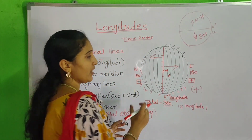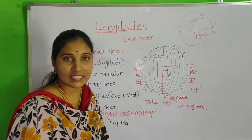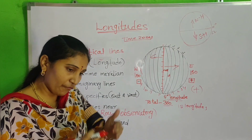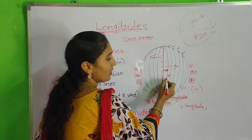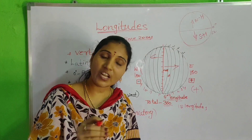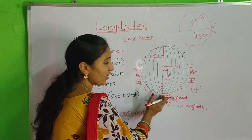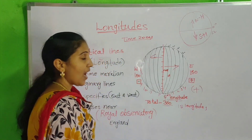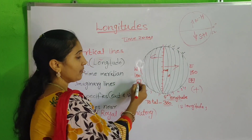Coming to each and every longitude — from one longitude to another longitude, there is a gap of 15 degrees. From 0, then 15 degrees, 30, 45, 60 — each zone from one line to another line is filled with 15 degrees. Mostly, when we move from 0 degree towards the East, we will add the time. And when we move from 0 degree towards the West, we will subtract — we will minus, deduct.